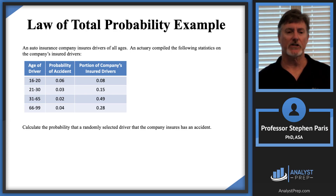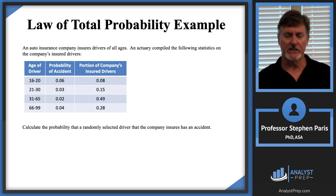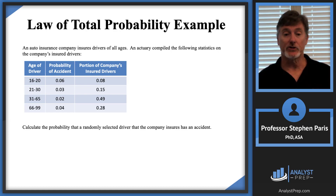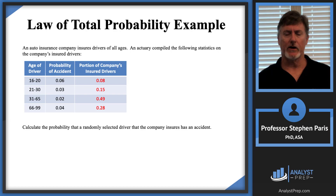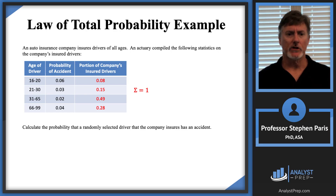We have the ages of drivers separated into groups: 16 to 20, 21 to 30, 31 to 65, and 66 to 99. We have the probability of an accident for drivers in each age category and the proportion of the company's insured drivers. The question is: calculate the probability that a randomly selected driver from the company has an accident. If I add up all those percentages in the last column, I get one — all drivers fall into one of these four categories.